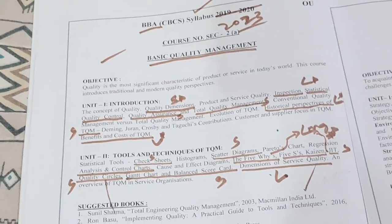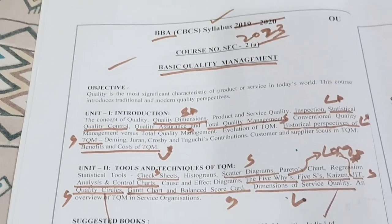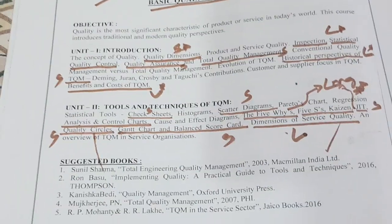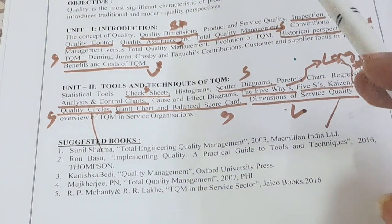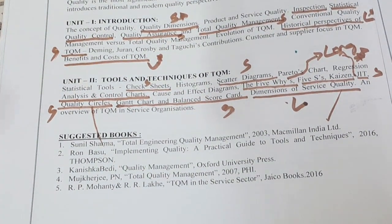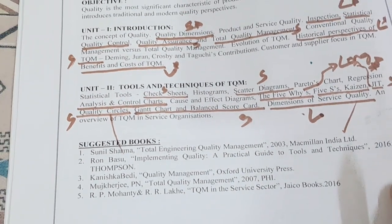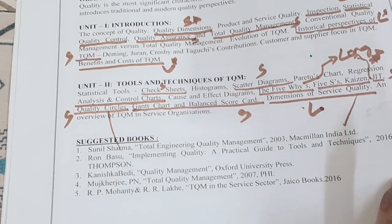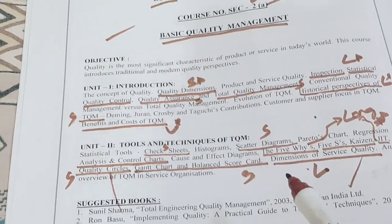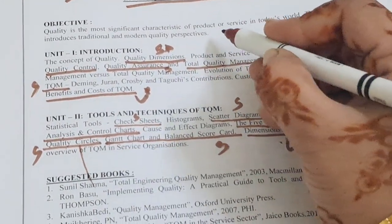These are the two units of Basic Quality Management for your BBA third semester according to Osmania University syllabus. I am giving you the latest important questions. If you learn these two units, you will score O plus or A plus grade inshallah.